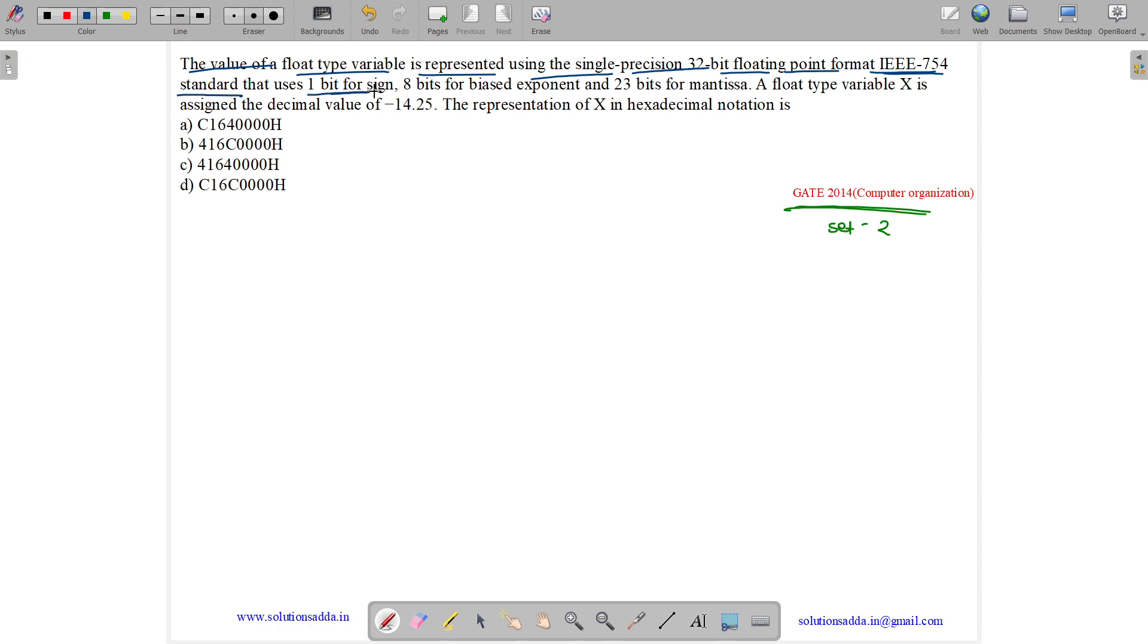That is 1 bit for sign. So our sign is 1 bit. Exponent is 8 bit. And mantissa is 23 bits. Exponent will come in between.